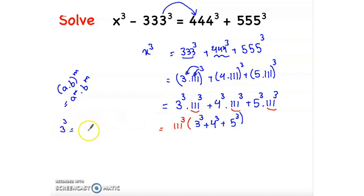Now 3 cubed equals 3 times 3 times 3 equals 27, 4 cubed equals 64, and 5 cubed equals 125. If we add these three we will get 216. So we have 111 cubed times 216.